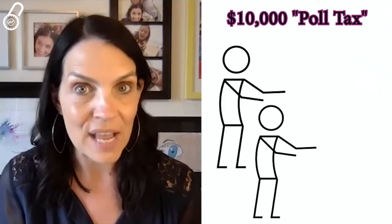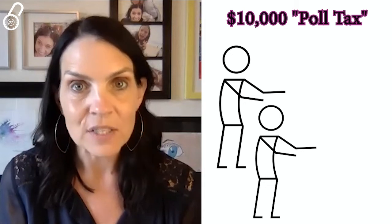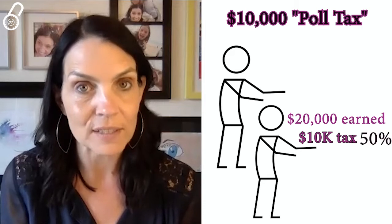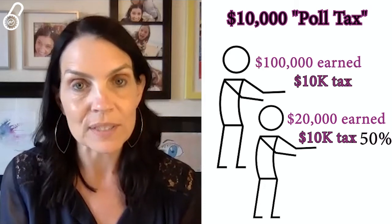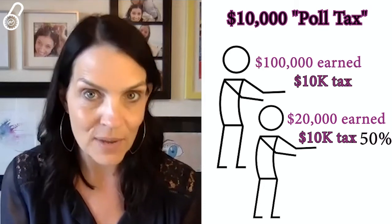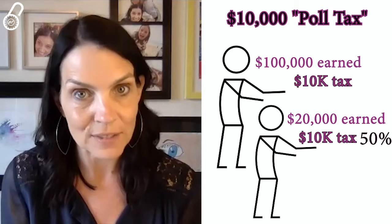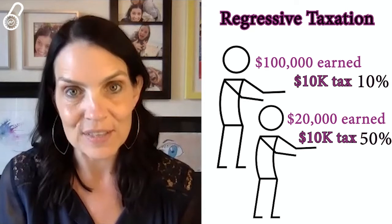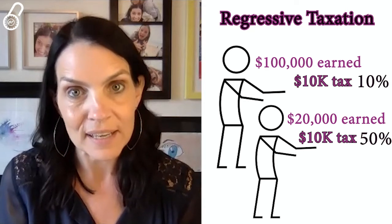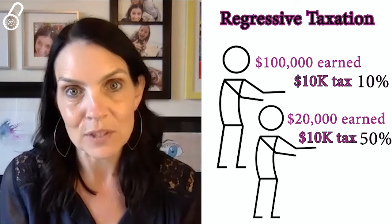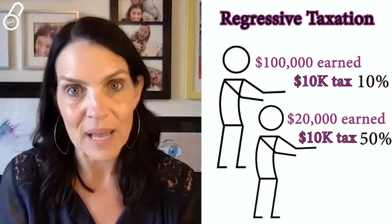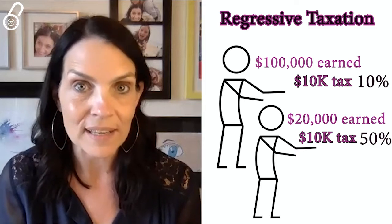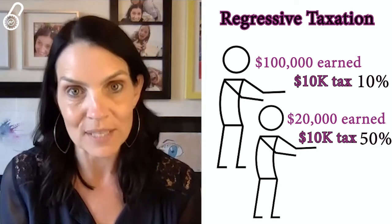Imagine a $10,000 poll tax. Someone who earns $20,000 has to pay $10,000 — their tax rate is 50%. Someone who earns $100,000 also has to pay $10,000 — their tax rate is only 10%. Hardly anyone thinks that regressive taxes are a good idea, though sometimes when we're imposing taxes for social policy reasons, they end up having regressive effects. That has to be weighed against whatever social policy reason we're pursuing.